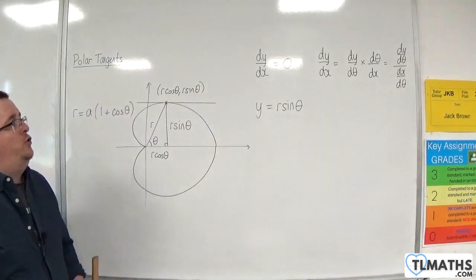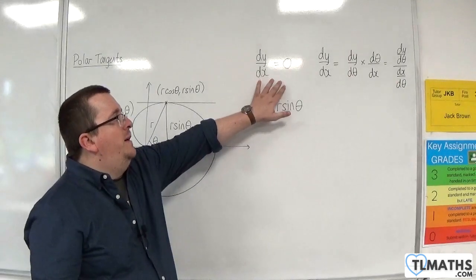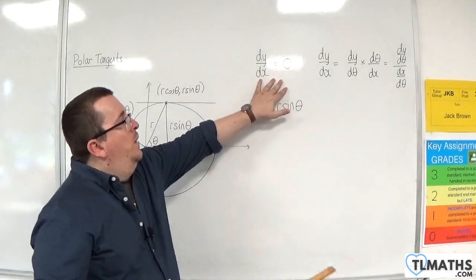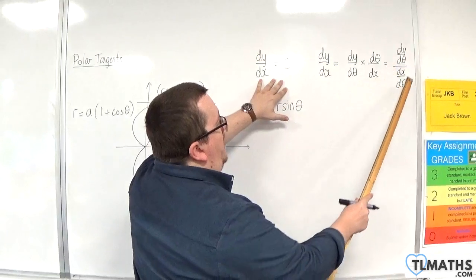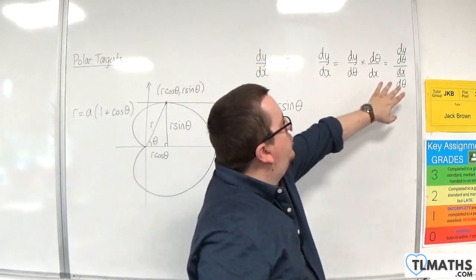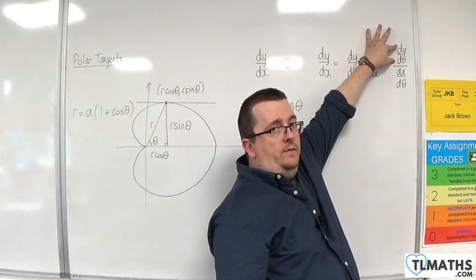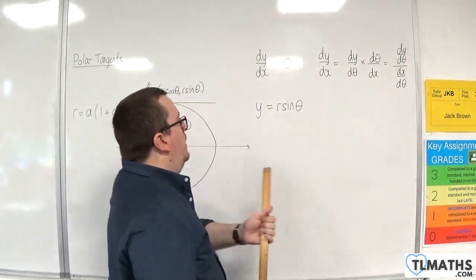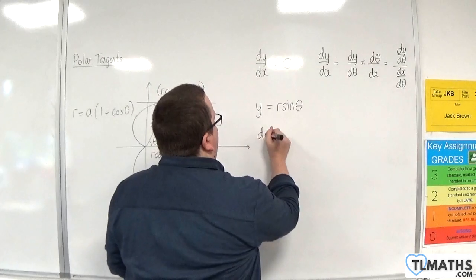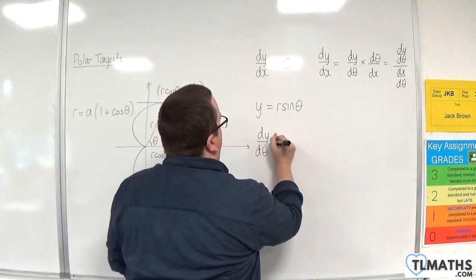Now because we are interested in dy by dx being equal to 0, we're going to need this to be equal to 0. And the only way that fraction is going to be equal to 0 is if the dy by d theta is 0. So essentially, we need dy by d theta to be 0.